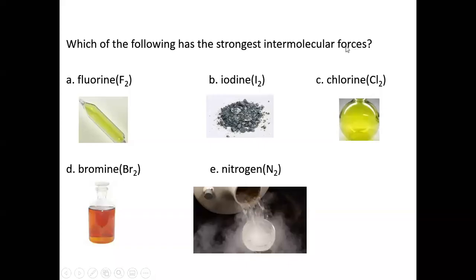To start off this lecture I want to go over a question involving which of the following has the strongest intermolecular forces. This is a continuation from the last lecture about intermolecular forces. Here we have fluorine, iodine, chlorine, bromine, and nitrogen molecules, and we want to know which one has the strongest intermolecular forces. I'll show you two different ways you can determine which one is the strongest.